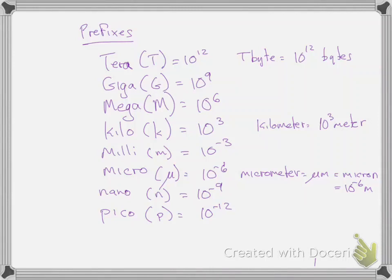Tera, capital T, ten to the twelfth. Terabytes is often what we talk about with memory on a computer. Giga, capital G, ten to the ninth. Gigabytes on a computer. Mega, capital M, ten to the sixth. It's a million.